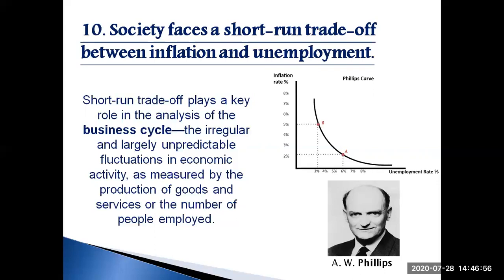This simply means that over a period of a year or two, many economic policies push inflation and unemployment in opposite directions. Policy makers face this trade-off regardless of whether inflation and unemployment both start at high levels — as in the early 1980s — at low levels — as in the late 1990s — or somewhere in between. This short-term trade-off plays a key role in the analysis of the business cycle: the irregular and largely unpredictable fluctuations in economic activity as measured by the production of goods and services or the number of people employed.